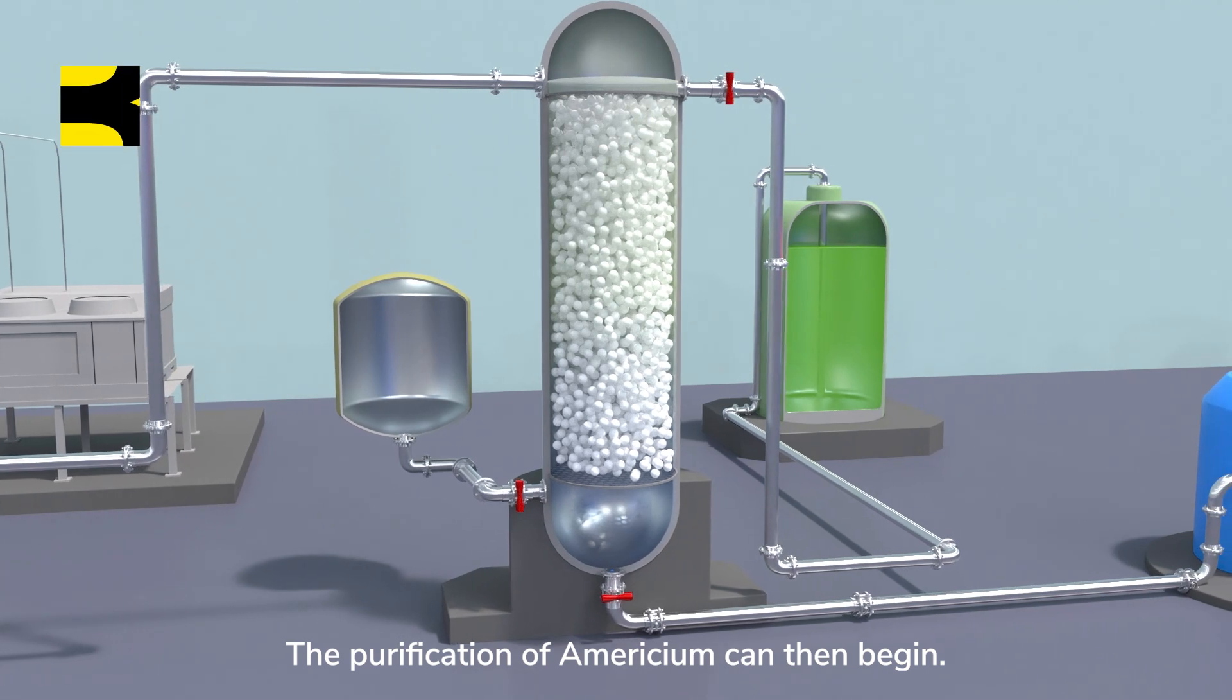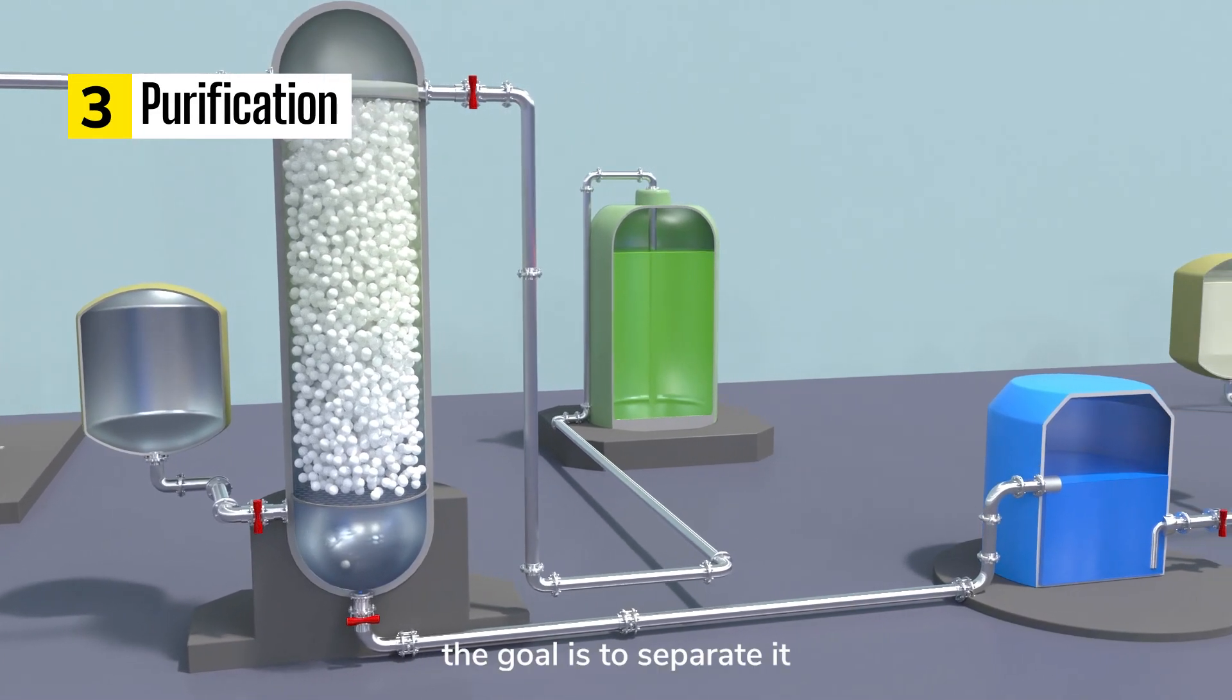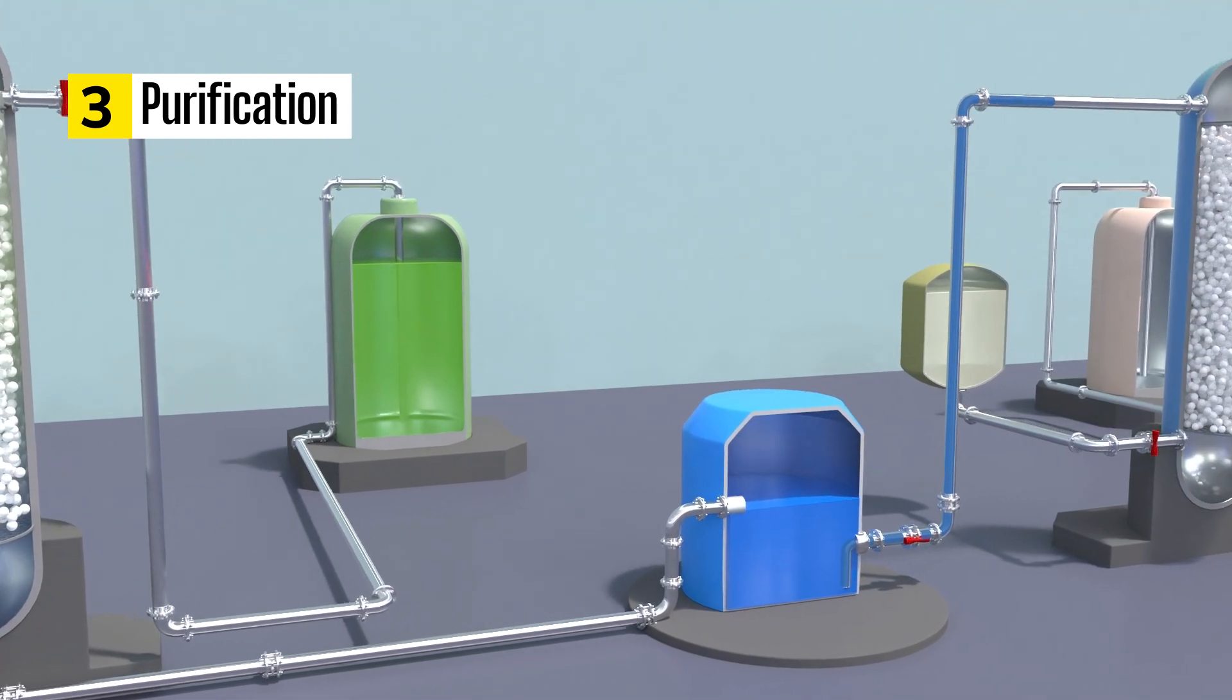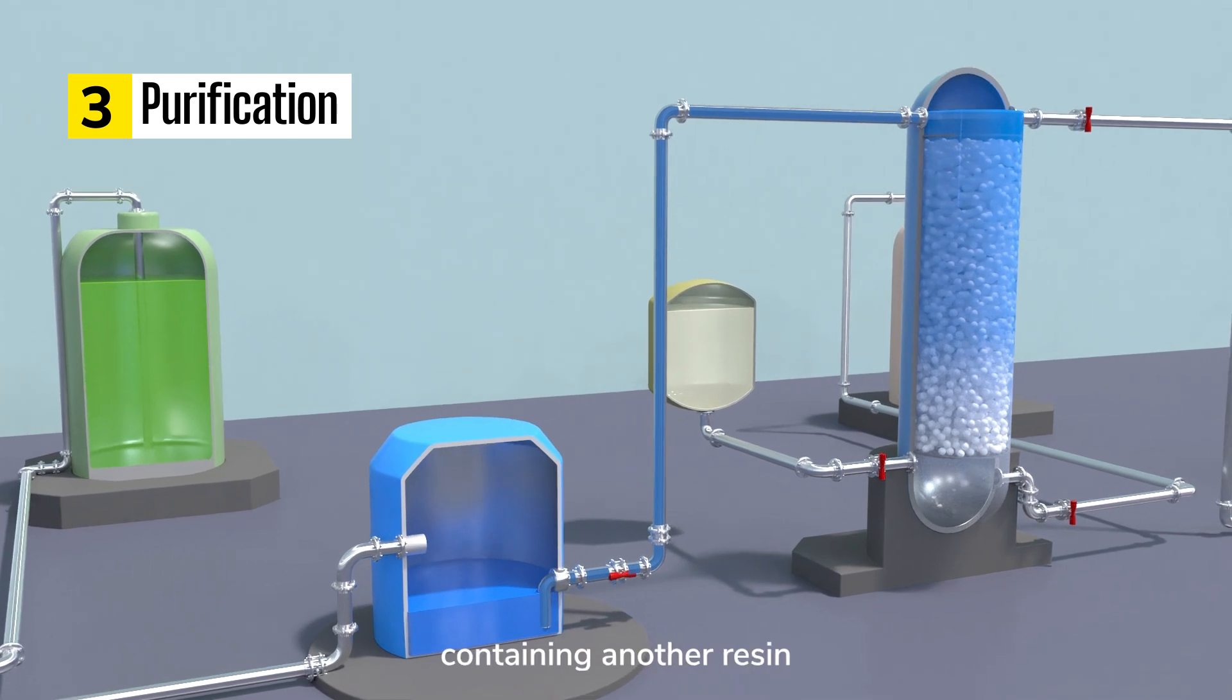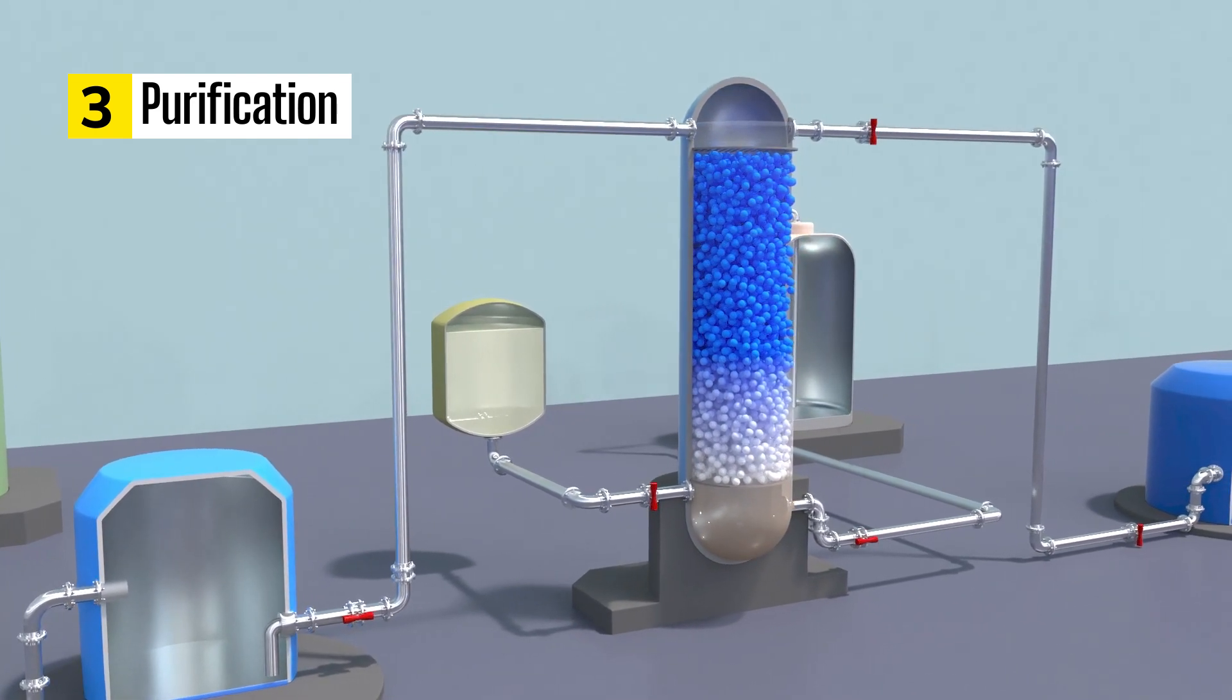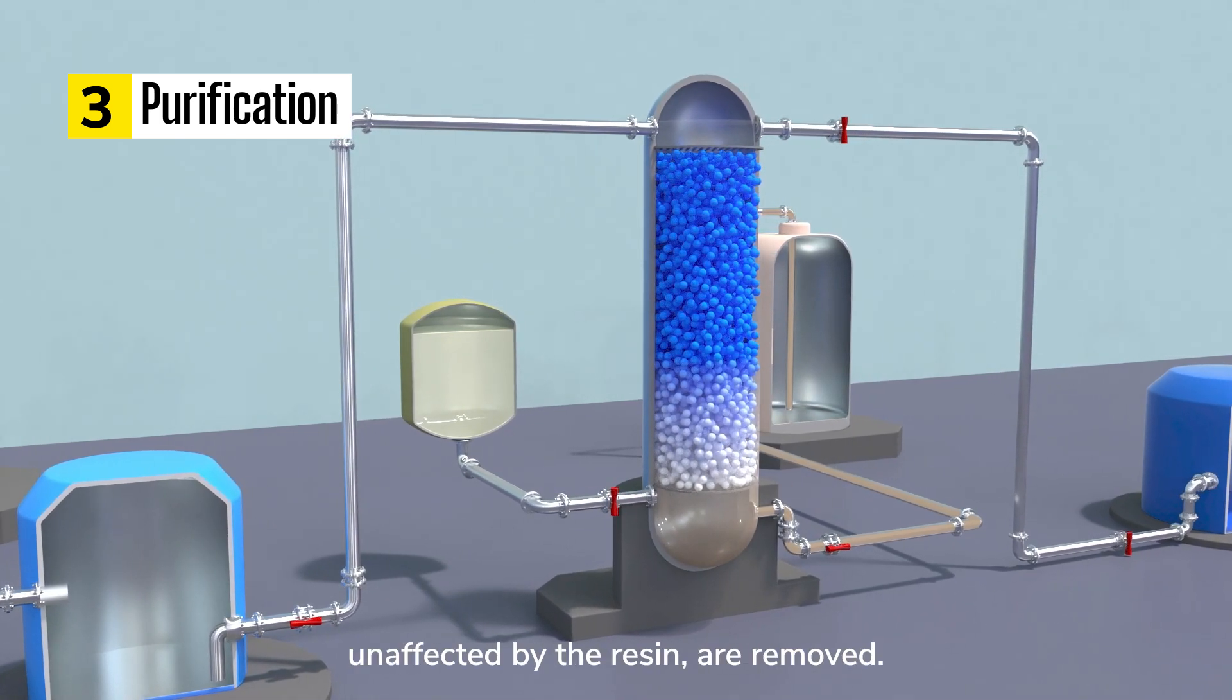The purification of Americium can then begin. The goal is to separate it from other impurities. The solution passes through a second column containing another resin, which this time captures the Americium. Residual impurities, unaffected by the resin, are removed.